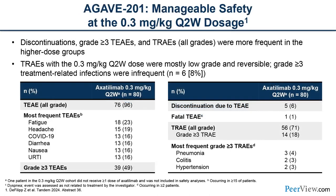Looking at the safety profile of the low-dose arm: most patients developed at least some adverse event while on treatment, largely reflective of what we already see in chronic GVHD patients — fatigue, headache, diarrhea, nausea. It was much more rare for an adverse event to cause discontinuation of axatilumab; this only occurred in 6% of participants. Eighteen percent experienced a treatment-related adverse event, with pneumonia, colitis, and hypertension being the only ones occurring in multiple patients. The higher-dose arms were associated with higher rates of adverse events, demonstrating dose dependency with the best safety profile in the low-dose cohort.